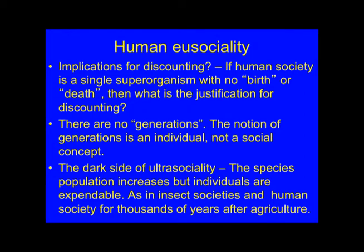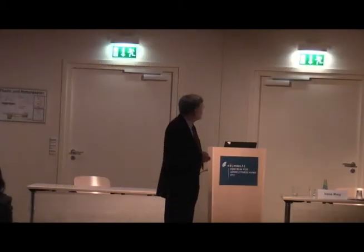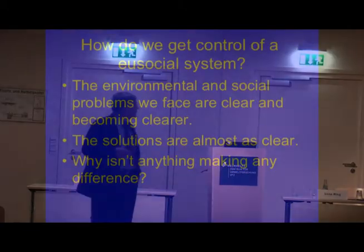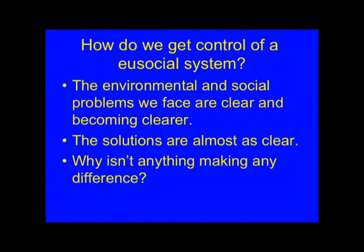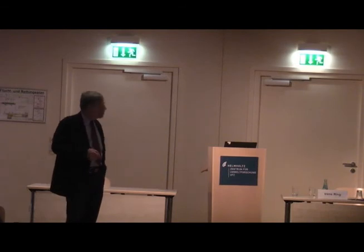The dark side of this is that species population increases but individuals are expendable. So how can we get control of this eusocial system? The environmental and social problems we face are clear — or becoming clear. The solutions are almost as clear, but why isn't anything making a difference? I think this is what's troubling most of us.